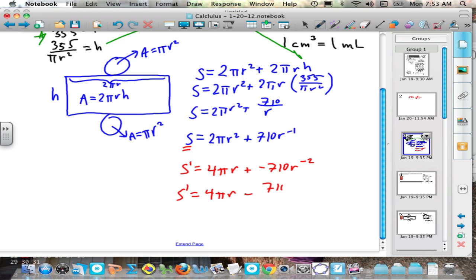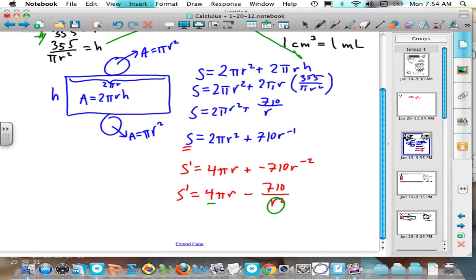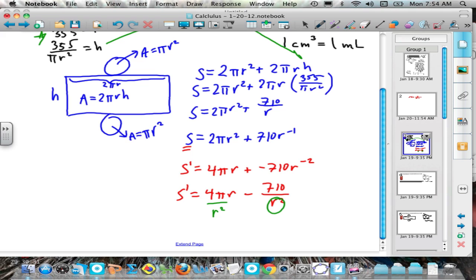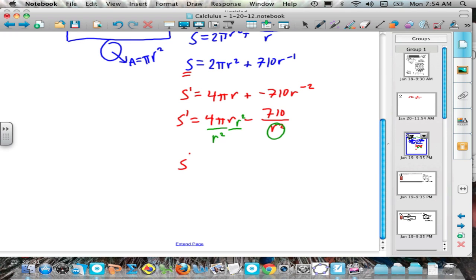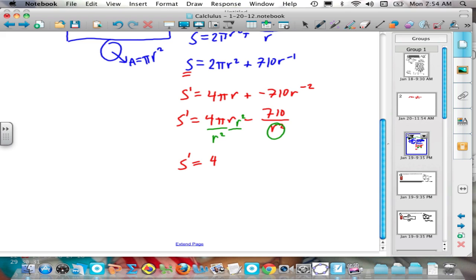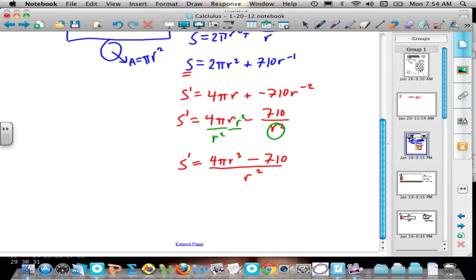I'm going to rewrite this as a fraction just so I can get a sense of how to simplify it. So it's minus 710 over r squared. If I get a common denominator of r squared, what I'm going to have to do is multiply this by r squared over r squared. That's allowed, because that r squared over r squared is just 1. So what I get is S prime is equal to 4 pi r cubed minus 710 all over r squared.